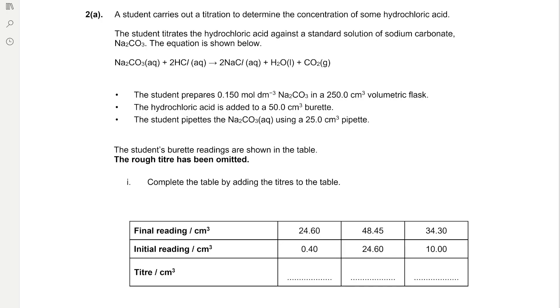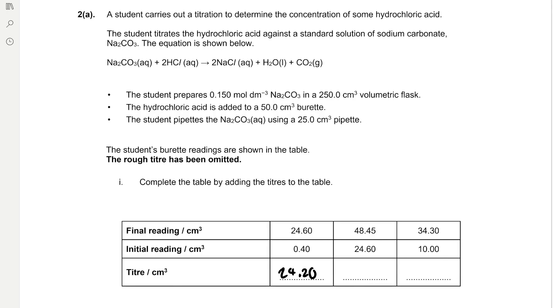So in titrations we always measure to two decimal places because that's the resolution of the burette. It's important that we put two decimal places for each of the titre values and we calculate the titre by subtracting the initial reading from the final reading. So 24.6 minus 0.4 is 24.20 cm³. Then 48.45 minus 24.60 is 23.85. Then 34.3 minus 10 is 24.30.